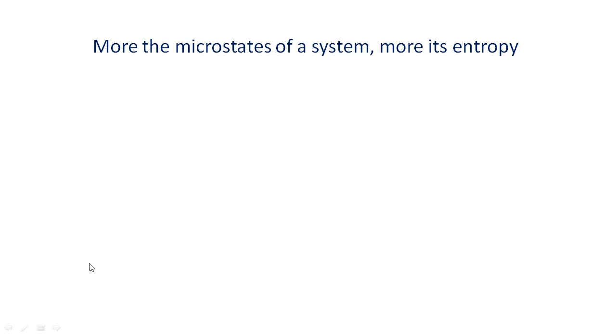We might guess that entropy is proportional to the number of microstates. So, entropy is proportional to W, where W is the number of microstates. However, we quickly realize that a little modification is required in this relation.